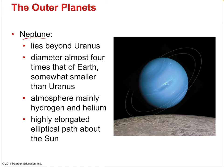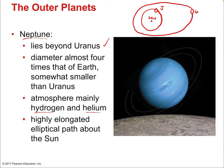Neptune is the last and most distant planet, with a diameter almost four times that of Earth — somewhat smaller than Uranus. Jupiter and Saturn are similar in size to each other, while Uranus and Neptune are similar but collectively much smaller than Saturn and Jupiter. Neptune has a highly elongated, eccentric orbital path around the sun, unlike the other planets which have nearly circular orbits.